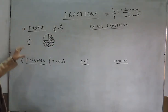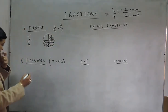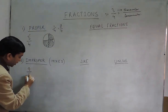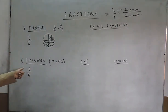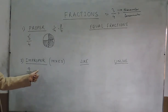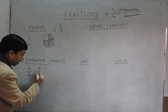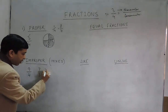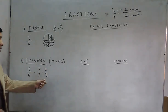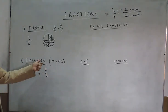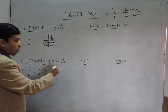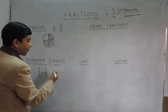When we talk about an improper fraction, the numerator is greater than the denominator. It can be 9 upon 4, 7 upon 3, or 5 upon 3. Where the numerator is greater than the denominator, it is known as an improper fraction. This improper fraction is also known as a mixed fraction.